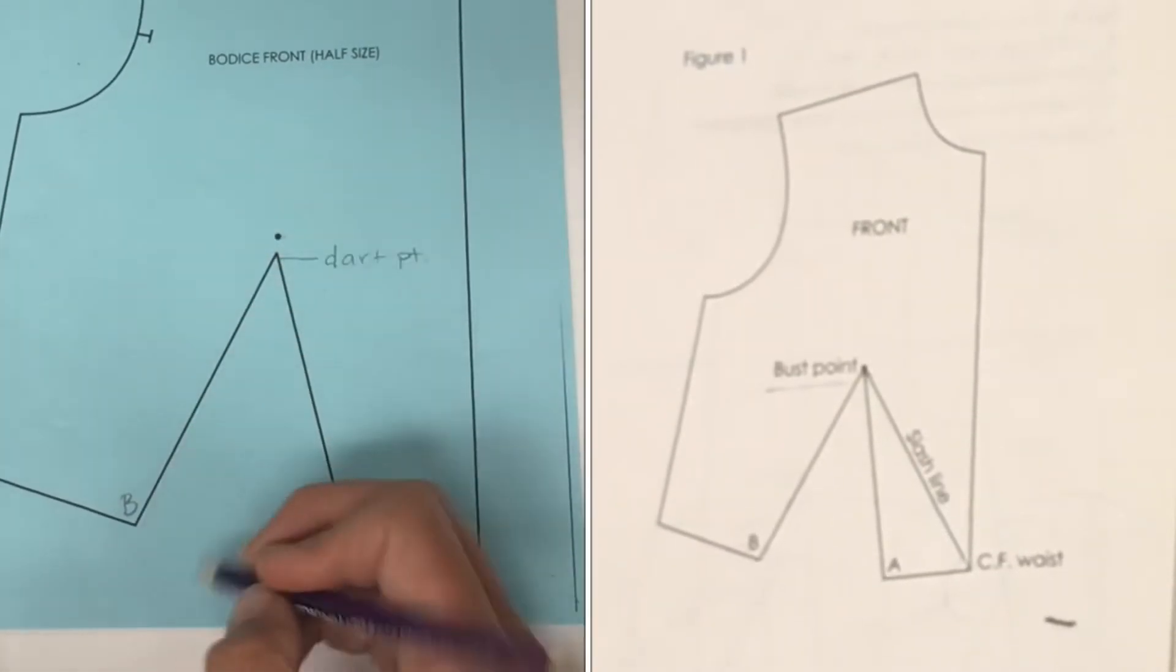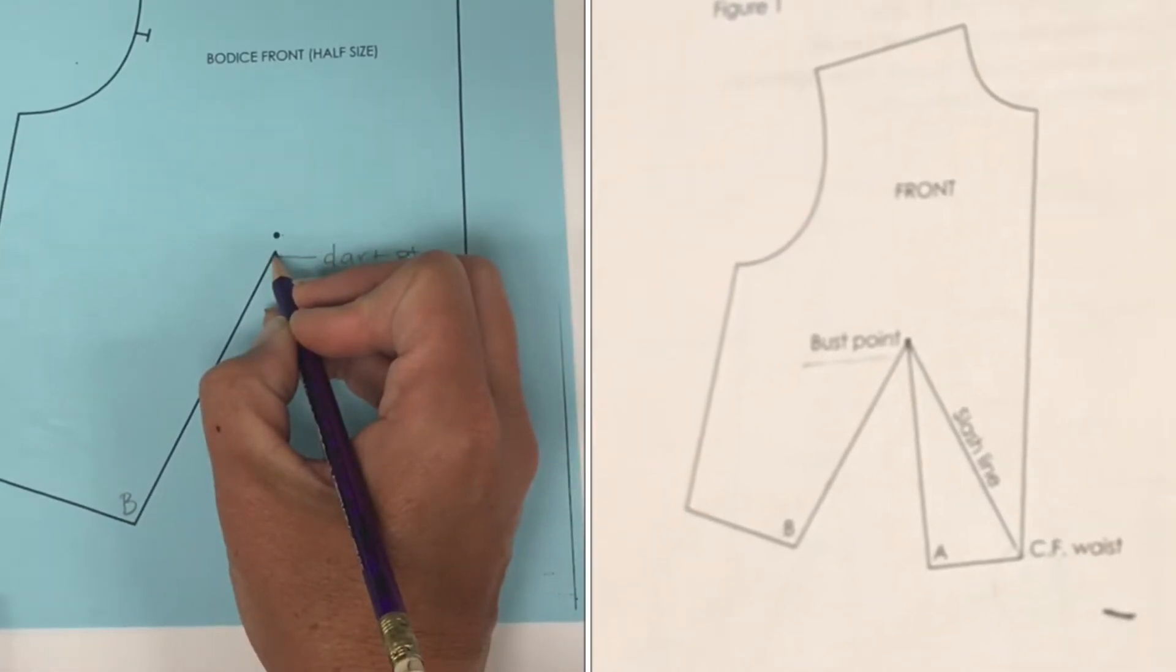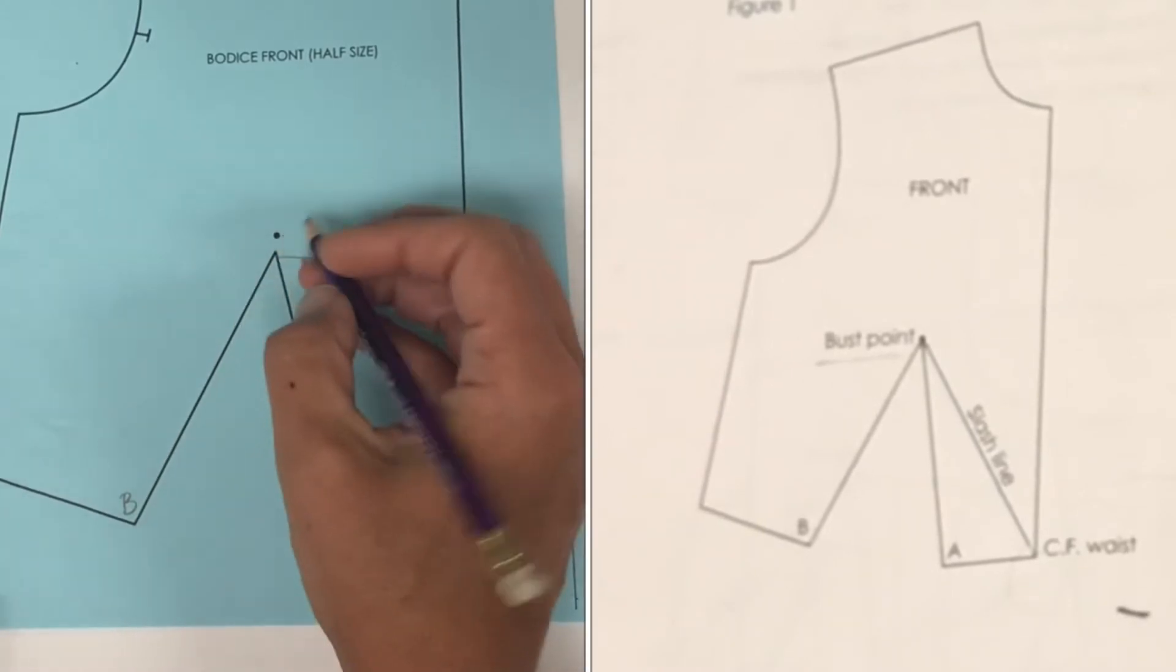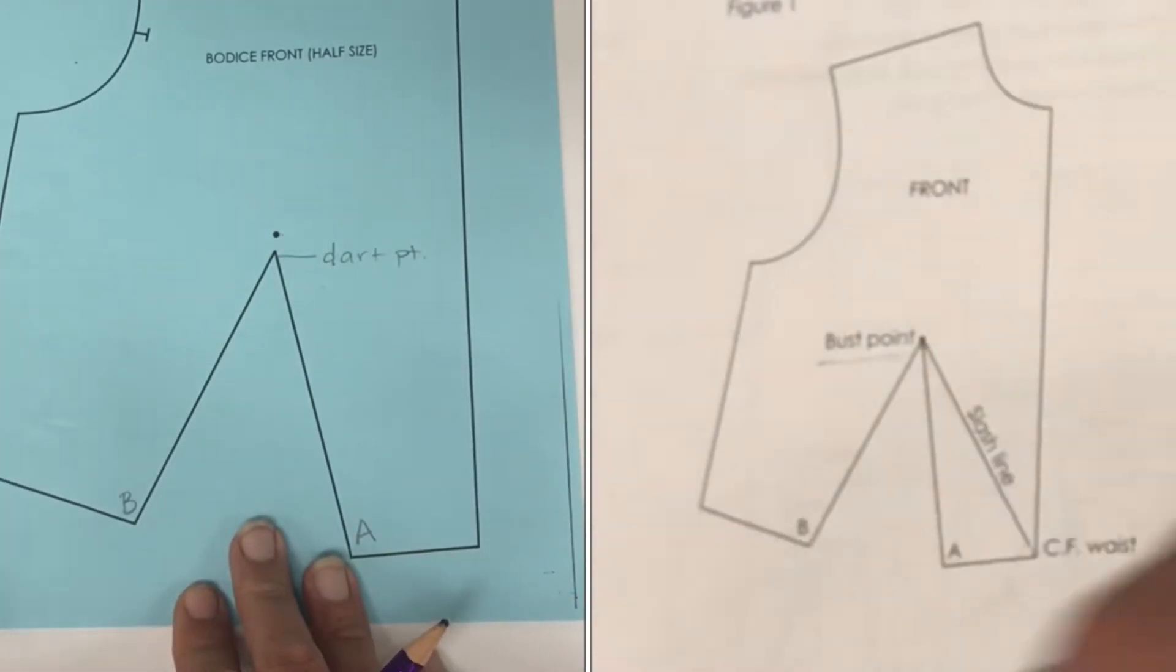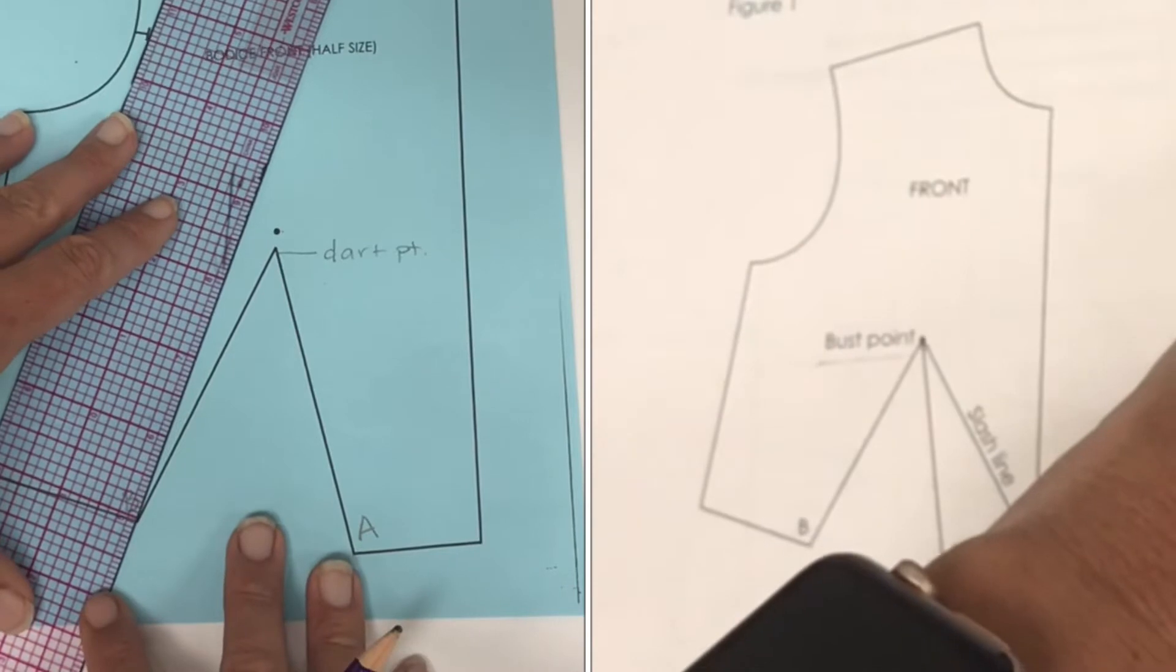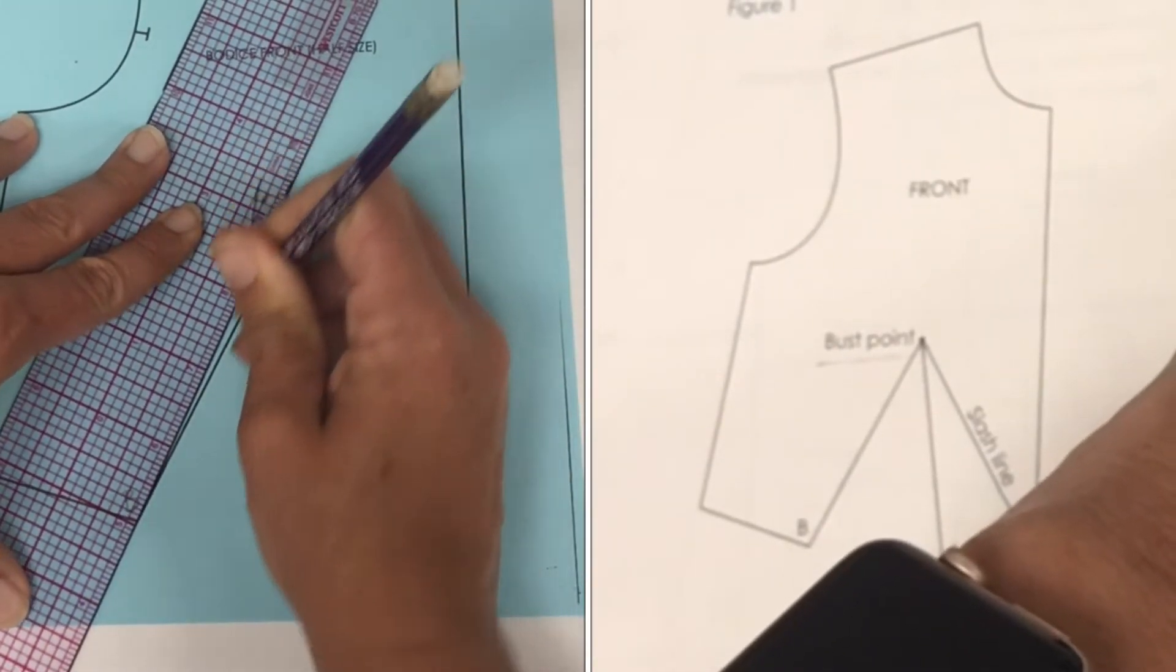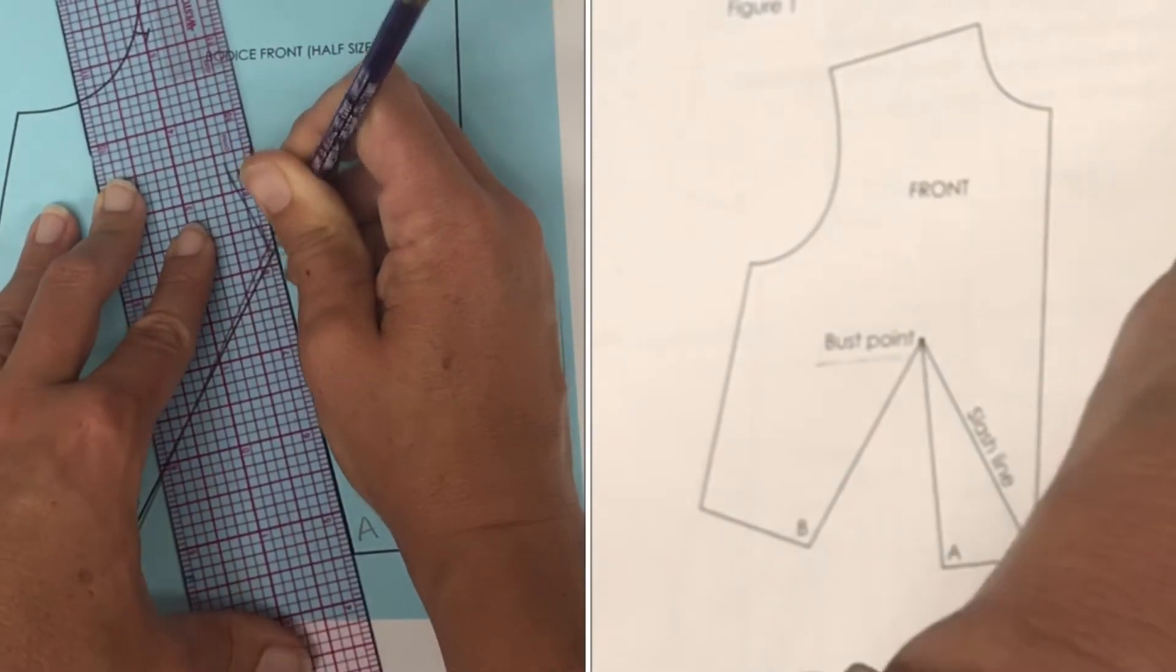So when we actually sew up our dart, we don't want the dart point to fall exactly on the bust or it'll just be a little pointy. We really want it to fall a little bit below it. So I don't know why the sloper didn't come this way, but we need to redraw our dart legs so that they meet at the bust point and not the dart point.